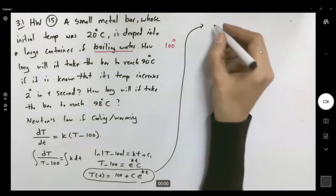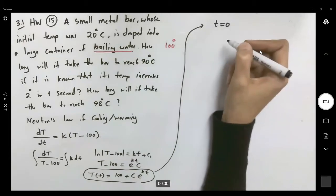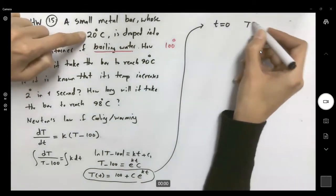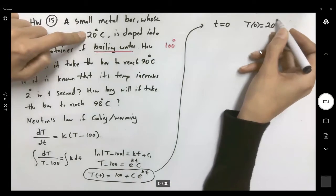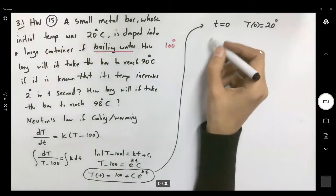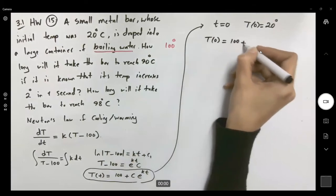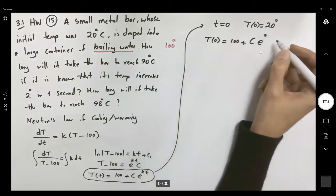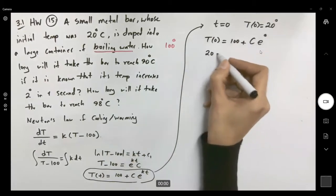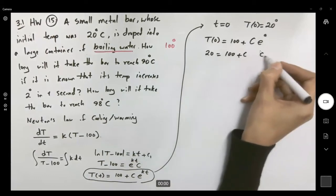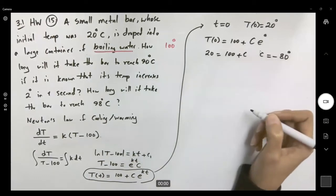At time 0 when t is equal to 0, the temperature is 20. It means that t of 0 becomes 100 plus c e to 0. 20 is 100 plus c. So c is negative 80 degrees.